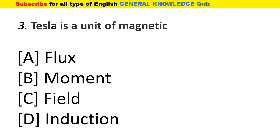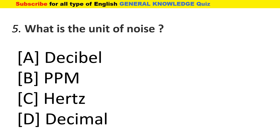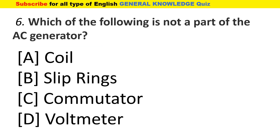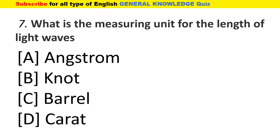Tesla is a unit of magnetic induction. The Doppler effect is associated with sound. The unit of noise is decibel. Which of the following is not a part of the AC generator? The answer is commutator.